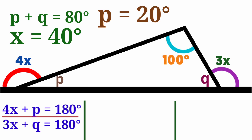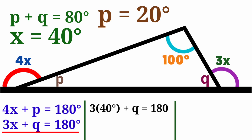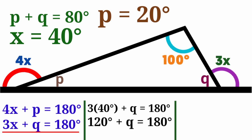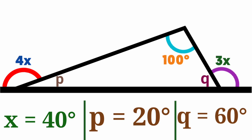To find angle Q, we use the equation 3x plus Q equals 180 degrees. Substituting x equals 40: 3 times 40 is 120 degrees. So 120 plus Q equals 180, giving us Q equals 180 minus 120, which is 60 degrees. Simple and straightforward.